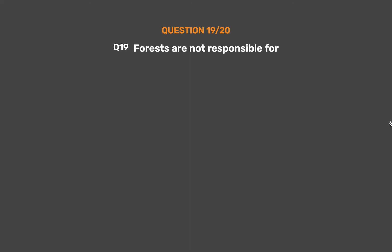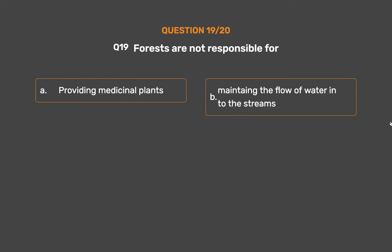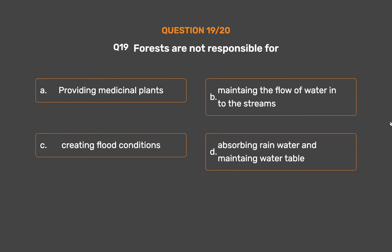Question number 19. Forests are not responsible for. Option A: Providing medicinal plants. Option B: Maintaining the flow of water into the streams. Option C: Creating flood conditions. Option D: Absorbing rain water and maintaining water table. The correct answer is Option C: Creating flood conditions.